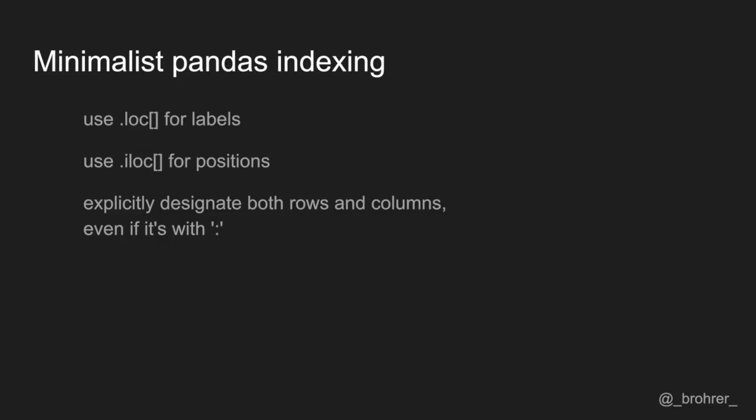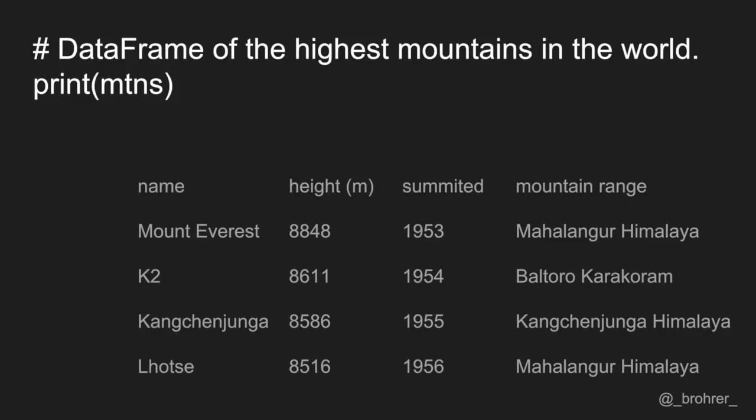We'll step through some examples to illustrate these, and below is a link to the Python script if you'd like to run them yourself. To start with, we'll create a small data frame using data from Wikipedia on the highest mountains in the world. For each mountain, we have its name, height in meters, year when it was first summited, and the range to which it belongs.